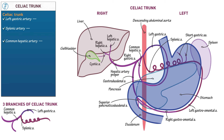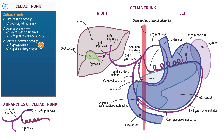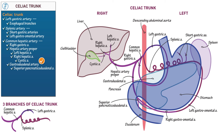Let's summarize these arteries in our table. Denote that the left gastric artery gives rise to esophageal branches — these were omitted in our diagram for simplicity. The splenic artery gives rise to short gastric arteries and the left gastroomental artery. The common hepatic artery sends off the right gastric artery, then splits to form the hepatic artery proper and the gastroduodenal artery. The hepatic artery proper splits to form the left and right hepatic arteries. The right hepatic artery sends off the cystic artery to the gallbladder. The gastroduodenal artery gives rise to the superior pancreaticoduodenal artery and the right gastroomental artery, which anastomoses with the left gastroomental artery.